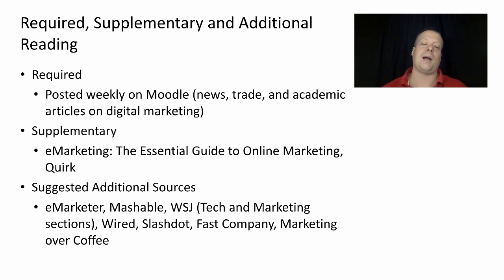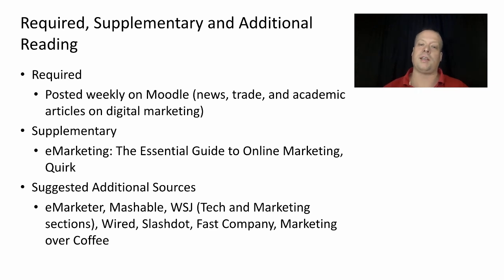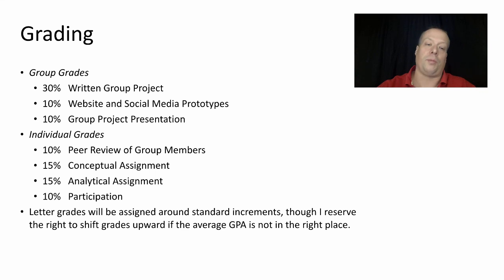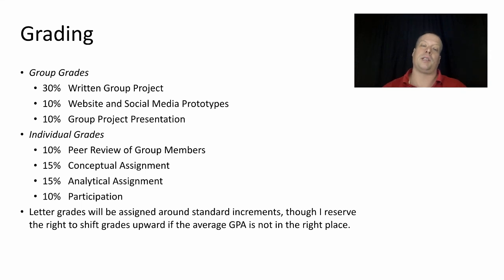Grading for this class: 50% of your grade is based upon a group project. Of that, 30% is the written group project you'll turn in, 10% is based on website and social media prototypes you'll create, and 10% is based upon a group project presentation you'll do with me at the end of the class. For individual grades, 10% will be based on peer review — at the end of the course, you peer review your group members and your grade is based upon their peer review of you.